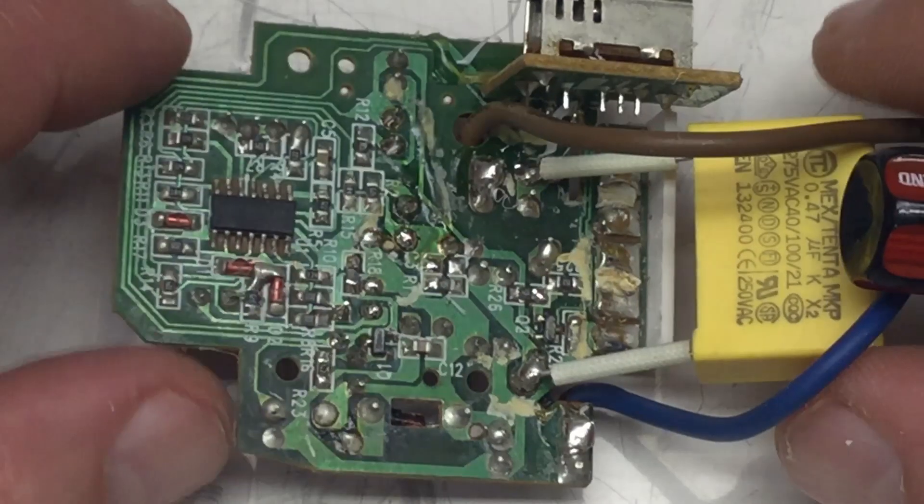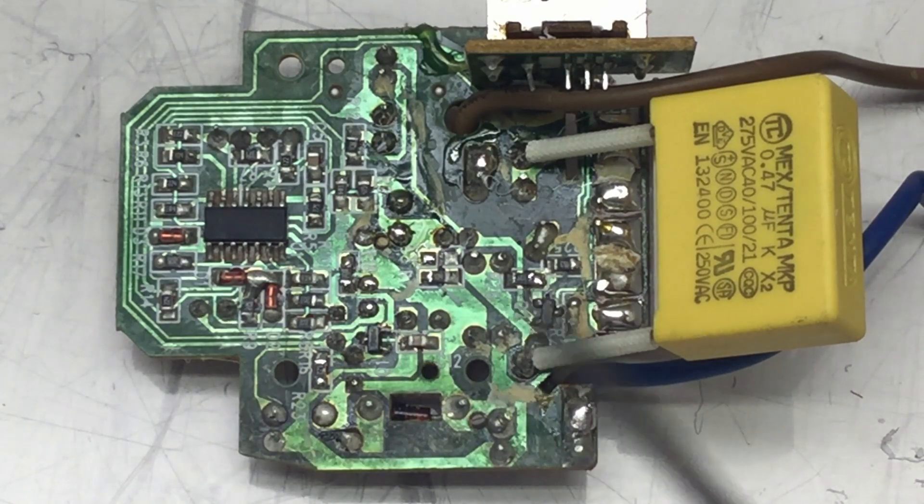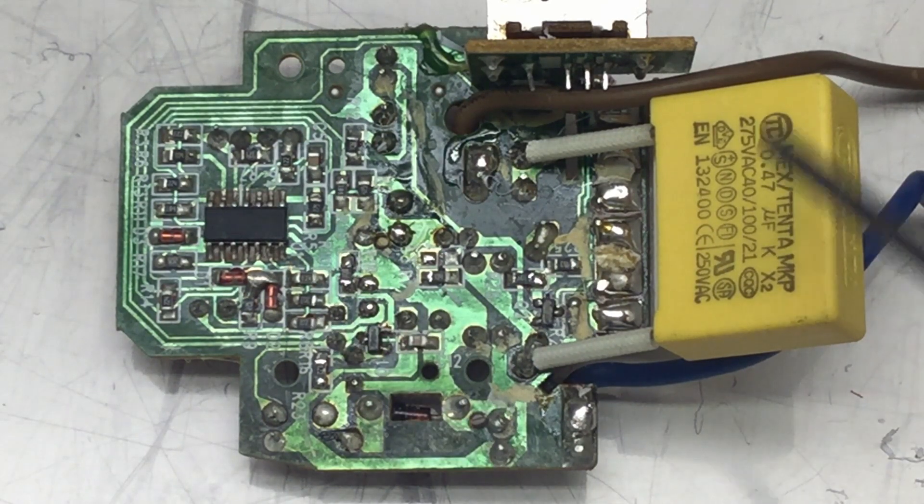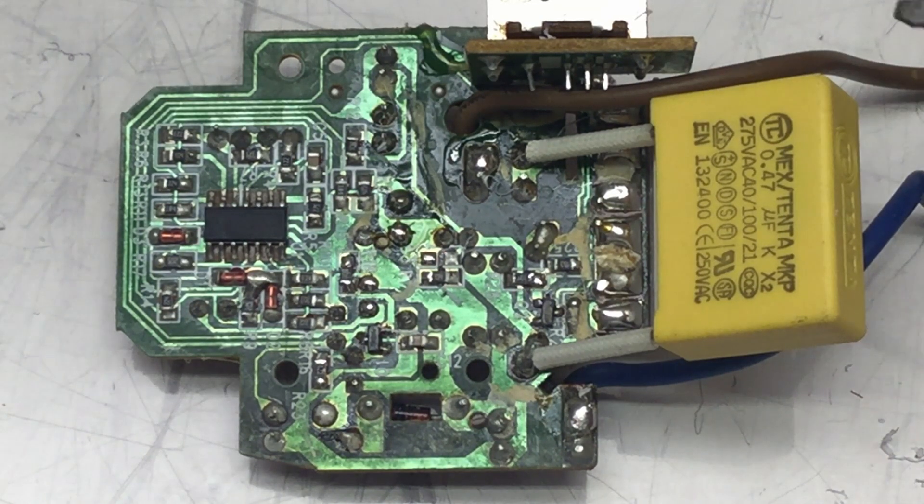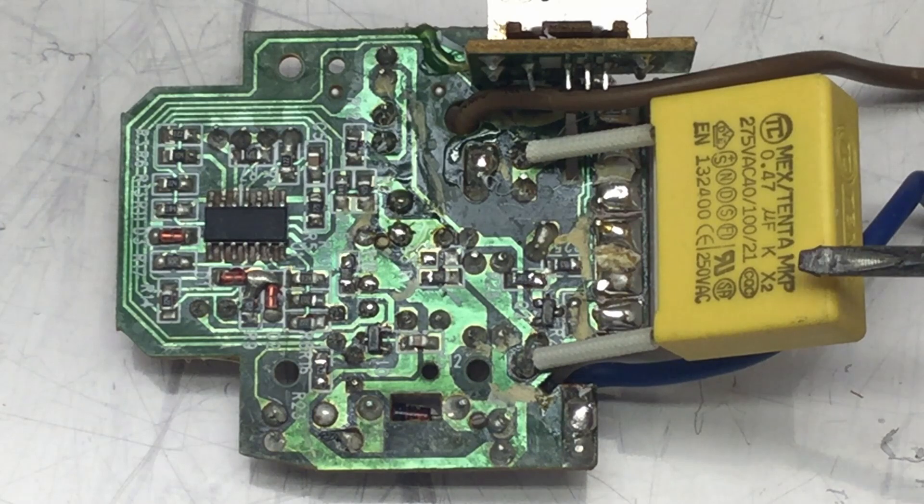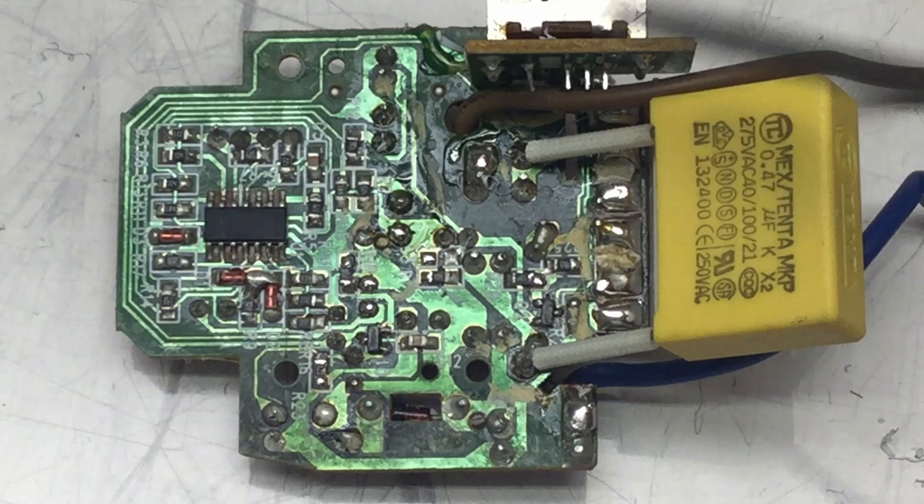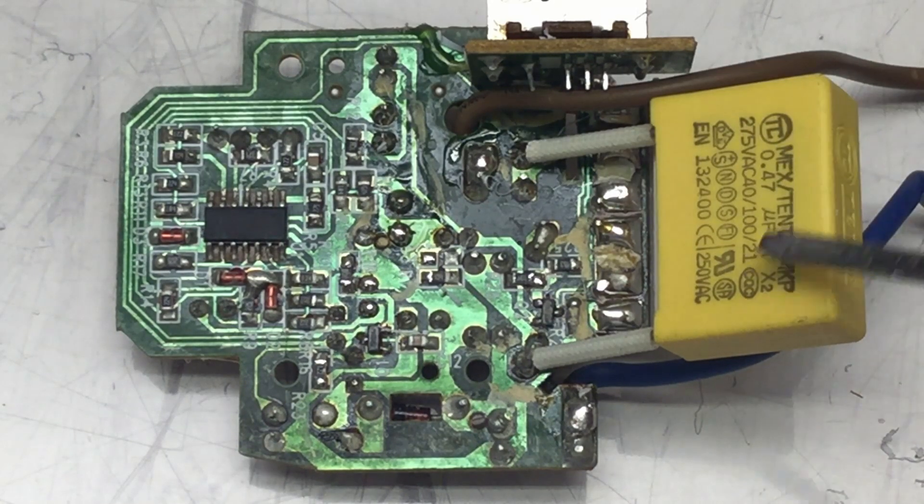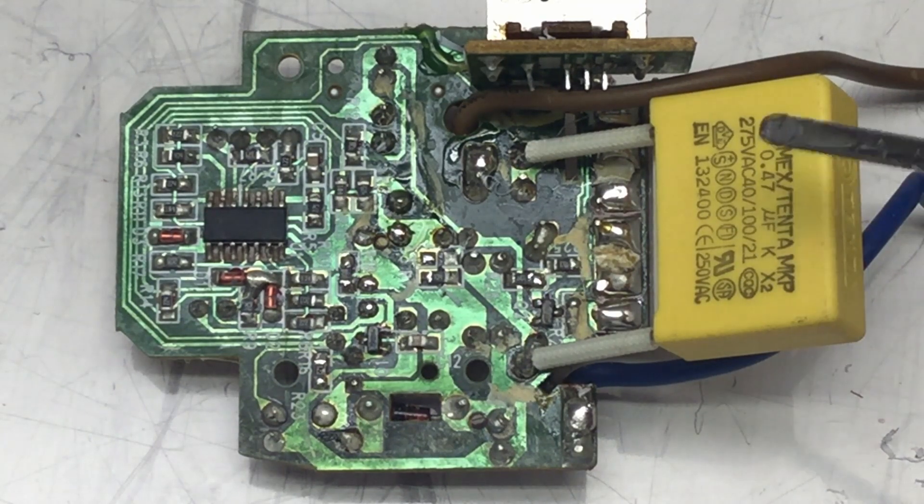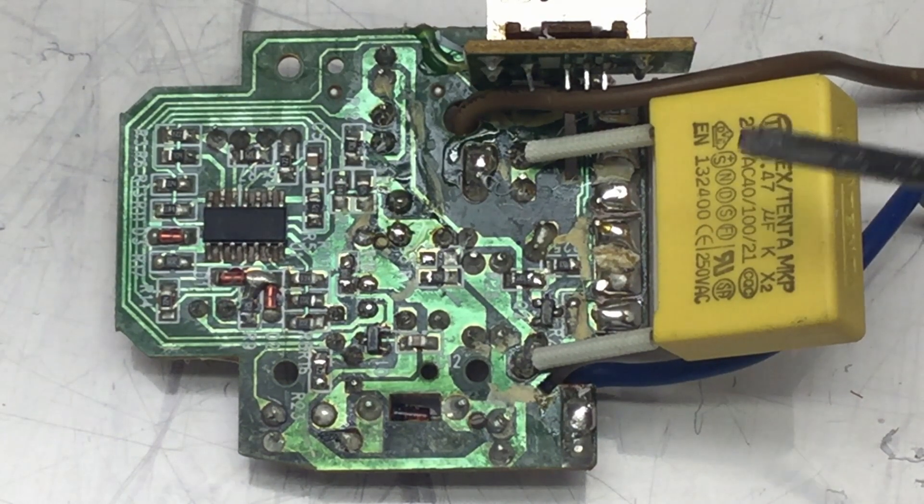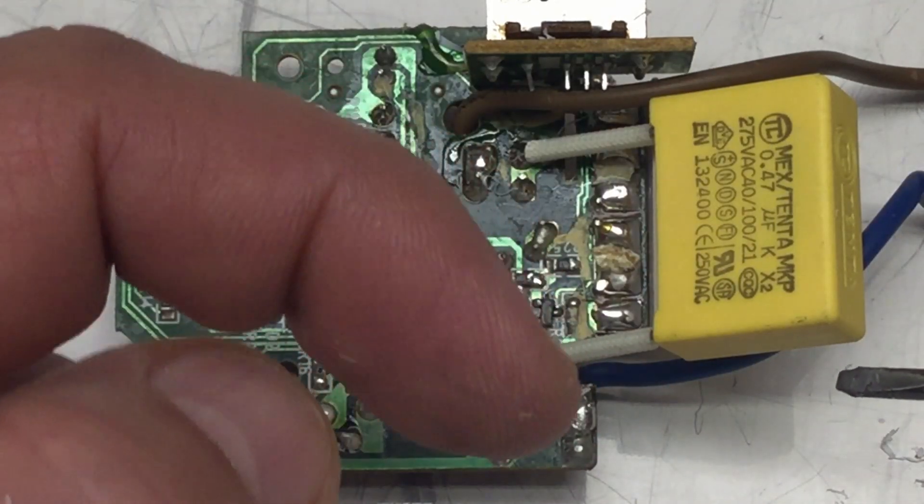And we can have a look at the back now. Let me refocus. The back is all SMD, but for this glaringly big X2 capacitor here. And I'm pretty sure this is or was powered by a capacitive dropper. I did a capacitive dropper card here. Link in the description.